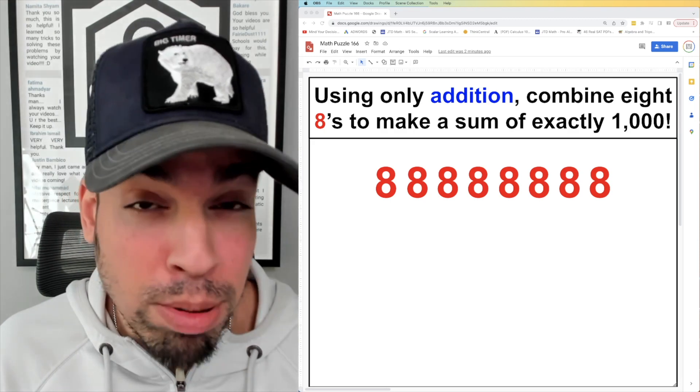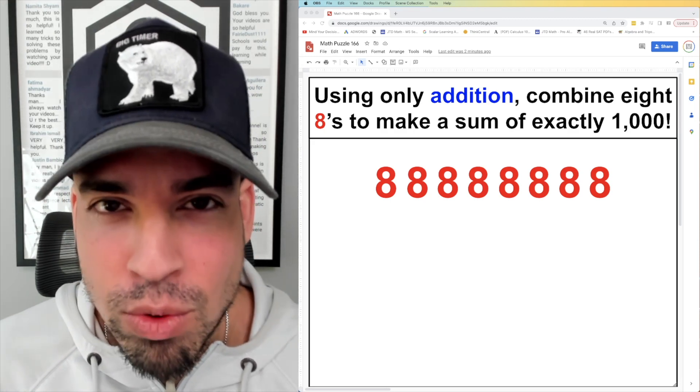What's up everybody and welcome back to another math puzzle. In this one, the question is as follows: using only addition, combine eight eights to make a sum of exactly one thousand. So there are the eight eights. Combining those in some way with plus symbols, make a thousand.